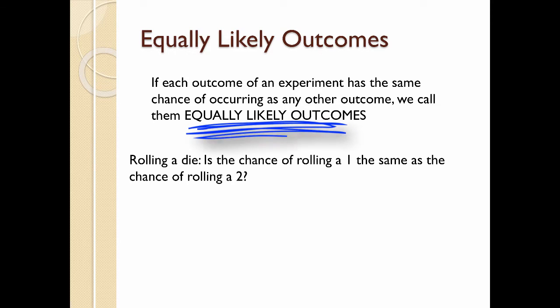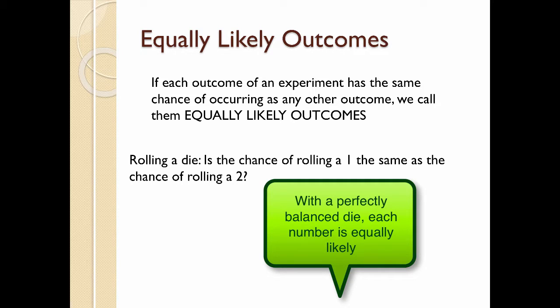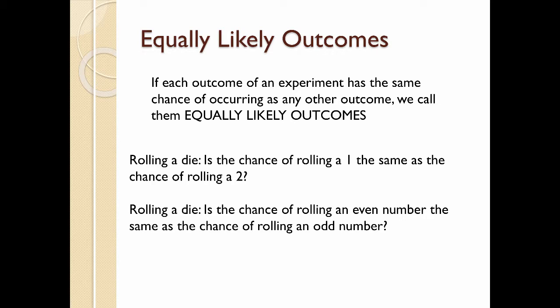Here's a little more terminology. Equally likely outcomes. So if each outcome of an experiment has the same chance of occurring as any other outcome, we call them equally likely outcomes. So once again, we have our rolling a die. Is the chance of rolling a 1 the same as rolling a 2? So again, you have to just imagine that we have the perfect die. It's perfectly balanced. So if we look at the die like that, then yes, any number is equally likely to turn up as any other number. So those would be equally likely outcomes. Is the chance of rolling an even number the same as rolling an odd number? It definitely is. There's three even numbers on the die, and there's three odd numbers.